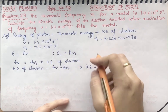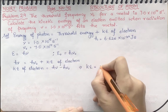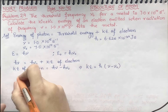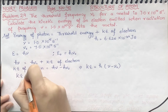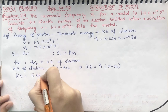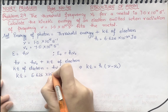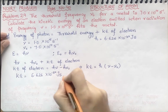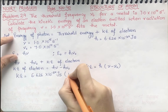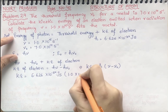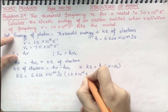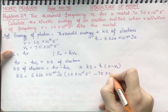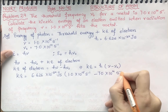Now put the values. I will take h common: kinetic energy = h(ν − ν₀). Here h is Planck's constant whose value is 6.626 × 10⁻³⁴ J·s. So kinetic energy = 6.626 × 10⁻³⁴ J·s × (1.0 × 10¹⁵ s⁻¹ − 7.0 × 10¹⁴ s⁻¹).